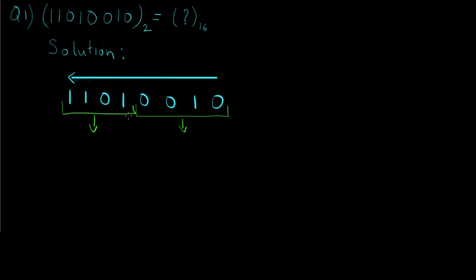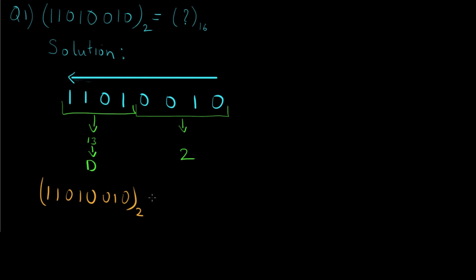According to the table we just saw, 0010 corresponds to 2 in hexadecimal, and 1101 is equivalent to D. Now that we have converted the individual pairs to their corresponding hexadecimal values, to get the final answer we just need to club these values. That is, 1101 0010 in binary is equivalent to D2 in hexadecimal.